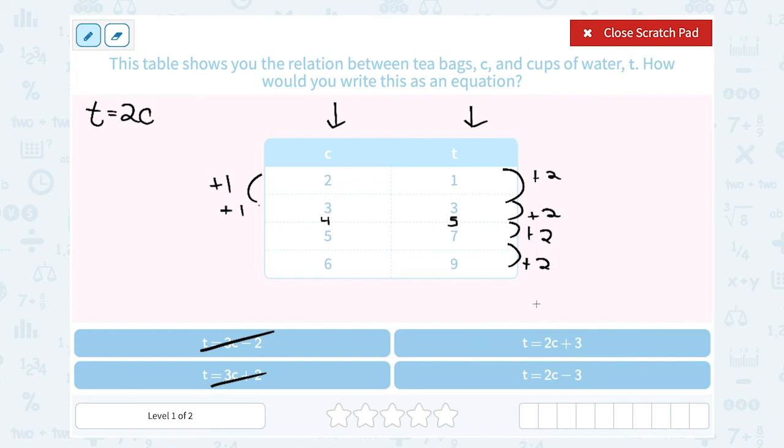And then I want to see which one of these describes my pattern, plus 3 or minus 3. Well, let's try plugging one of these numbers in. Remember when you have a table, if you plug the C value in for C, you should get the answer in the T column. So if I said 2 times C, 2 times 2 gives me 4. Well, what would I have to do to get that 4 down to 1? Adding 3 is not going to work. That's going to make it even bigger.